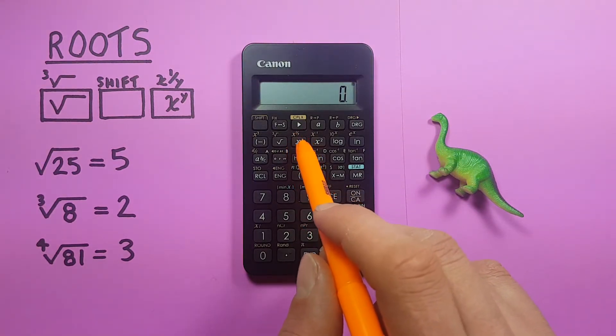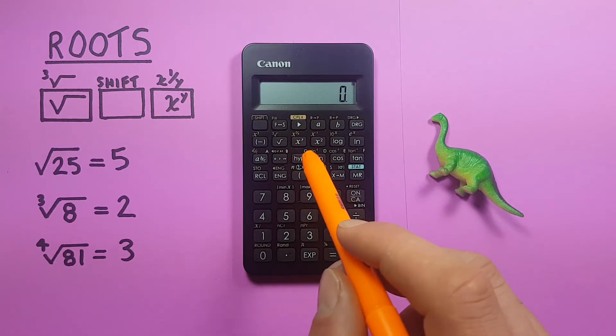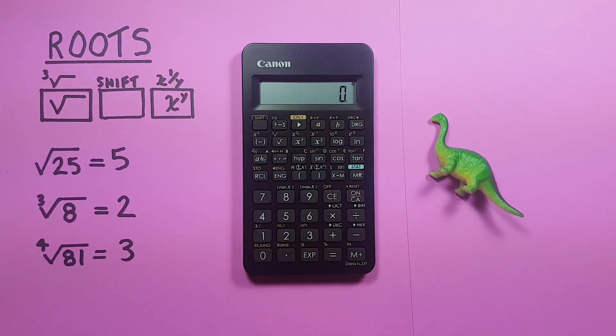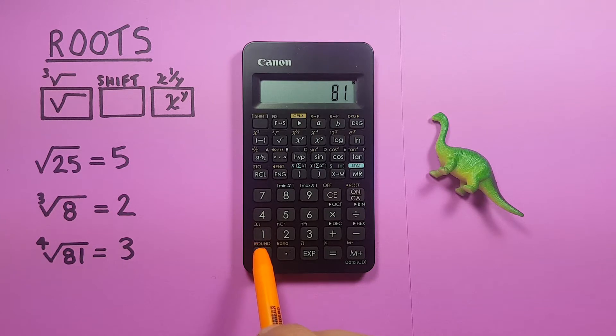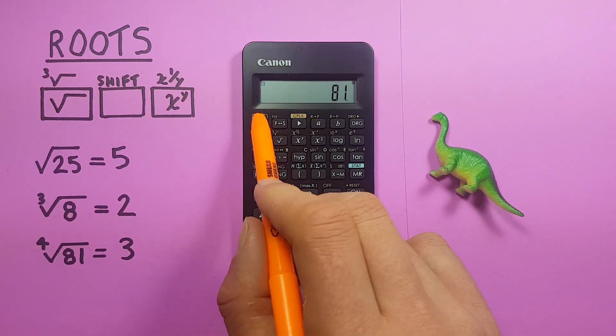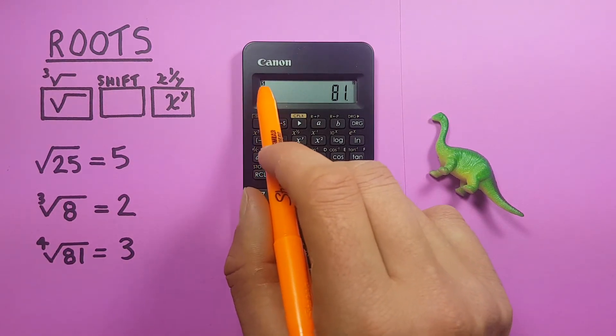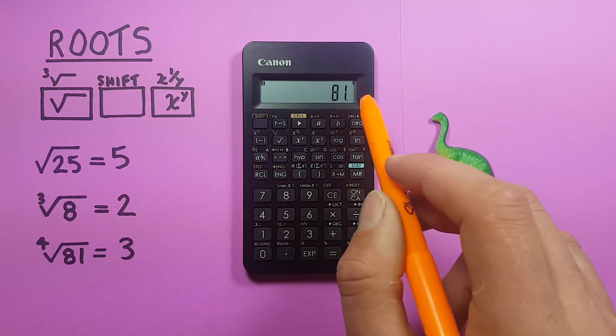This x to the 1 over y acts as a x root. So if we wanted to find, say, the fourth root of 81, we would place the 81 on the screen and then press the shift. You see the S appears in the top left corner there. That means shift is active.